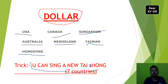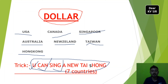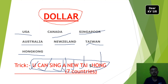You can sing a new Thai song. U means USA, Can means Canada, Sing means Singapore, A for Australia, New for New Zealand, Thai for Taiwan, and Hong Kong. This is the dollar currency.